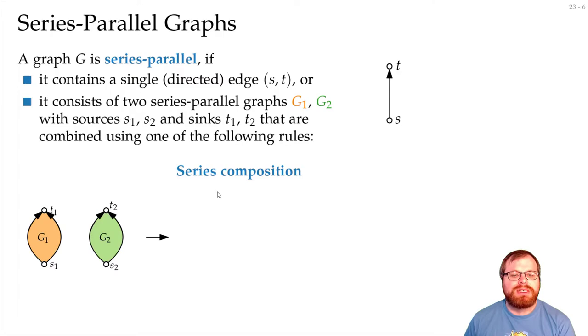The first is the Series Composition. That means that from one of them we take the sink, and from the other one we take the source, and we identify those two vertices. Then we get the following graph.